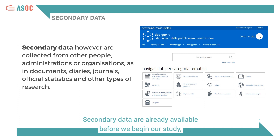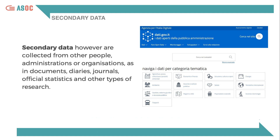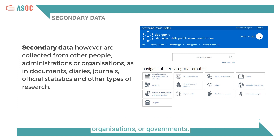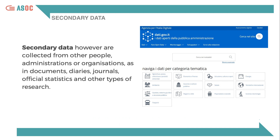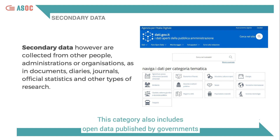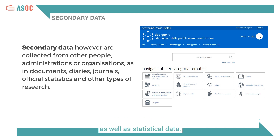Secondary data are already available before we begin our study — that is, already collected by other people, organisations or governments — as in the case of various types of documents, diaries, newspapers, official statistics and other research studies. This category also includes open data published by governments and statistical data.